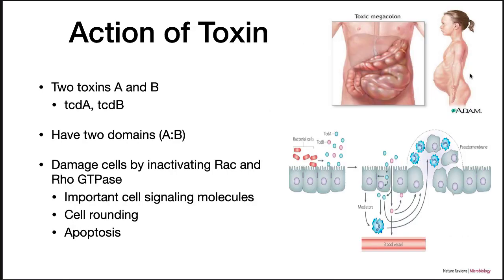The toxic megacolon is the result of an expression of two toxins, TcdA and TcdB. These are classic A-B toxins that damage cells by inactivating RAC and Rho GTPases. The RAC and Rho GTPases are important cell signaling molecules, and their inactivation causes cell rounding and apoptosis. This results in a strong inflammatory response, the formation of a pseudomembrane, growth of the bacteria and gas, and finally a significant distension of the abdomen.